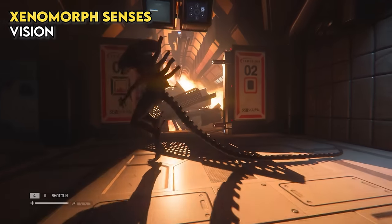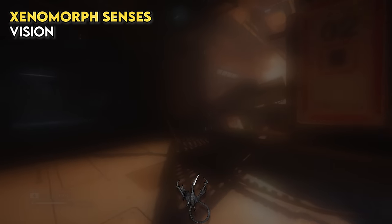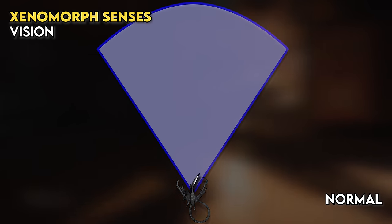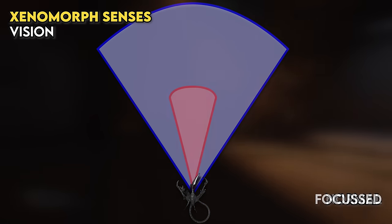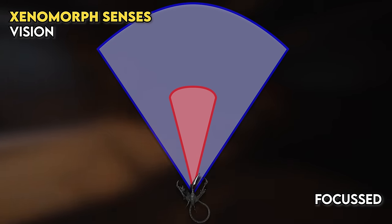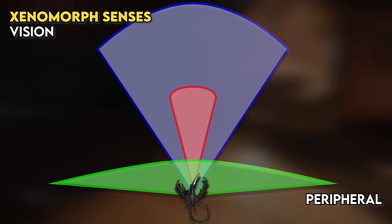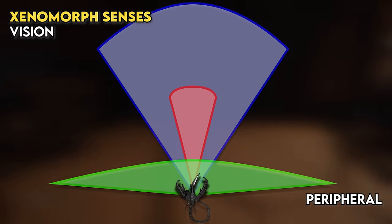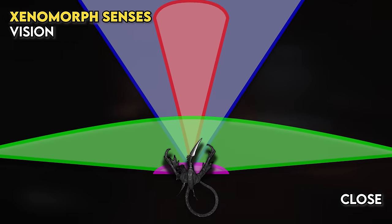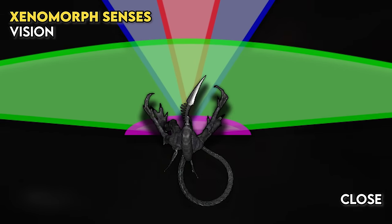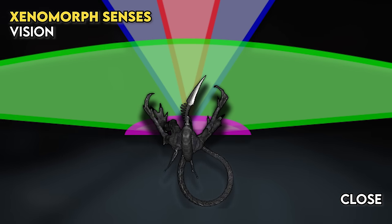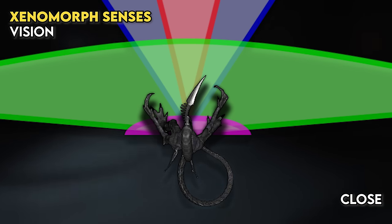All characters in Alien Isolation, be they human, android or xenomorph, have four different view cones. The normal cone for reading directly in front which can see pretty far ahead, a tighter view cone known as Focused which it uses when it's looking at specific objects or locations but within a shorter range, the peripheral cone that is shorter in length but much wider, and lastly a cone called Close that is very short but very broad and is designed to catch anything right next to it.